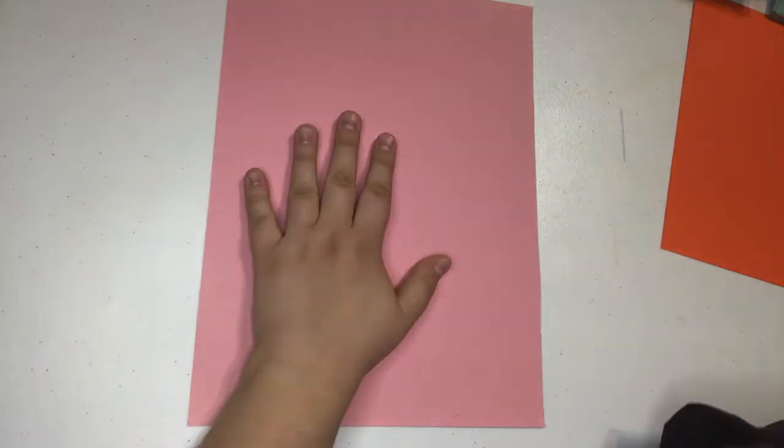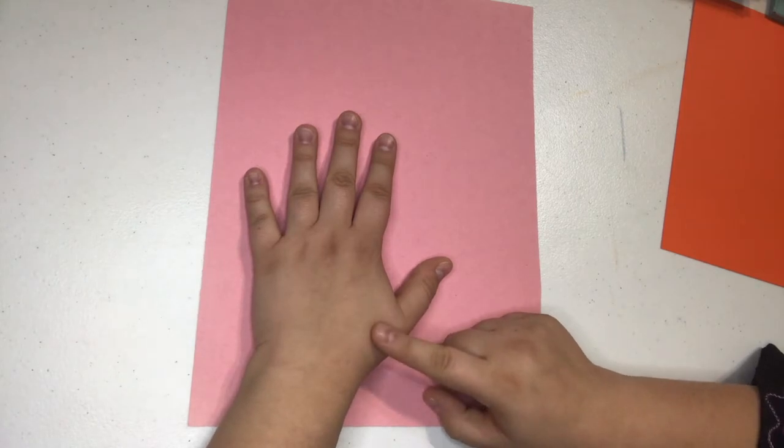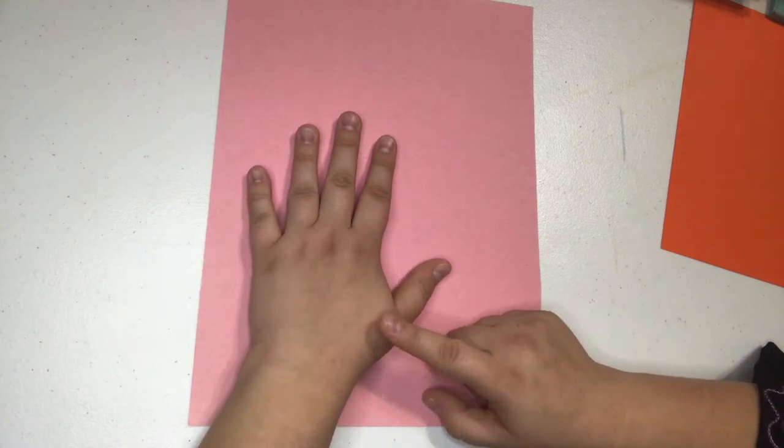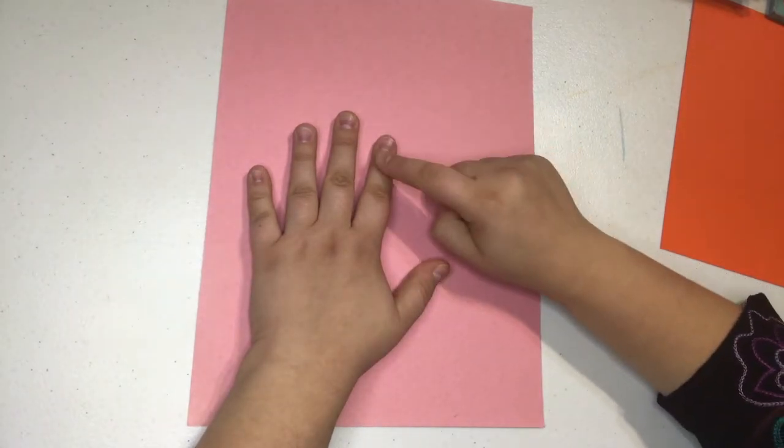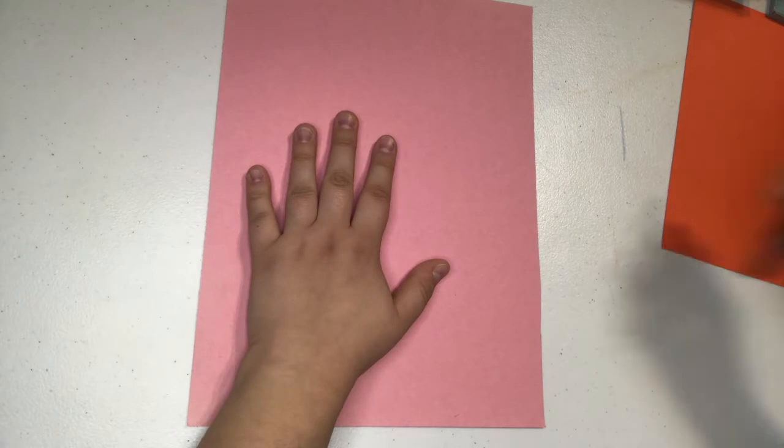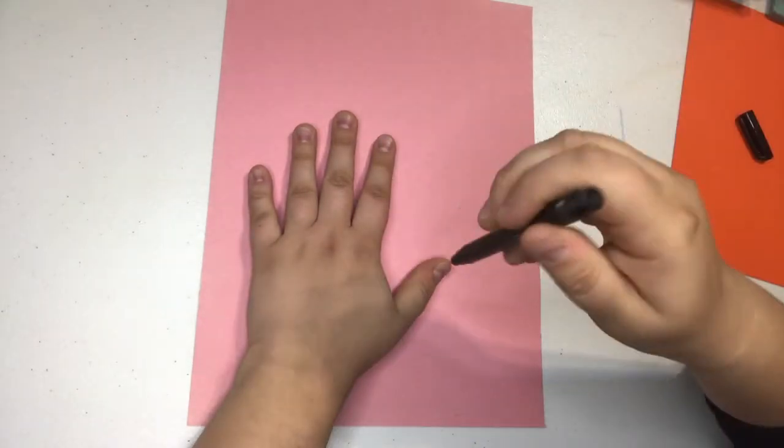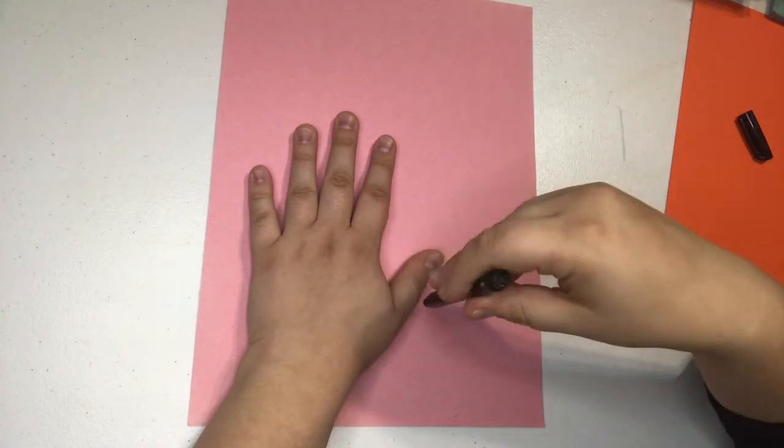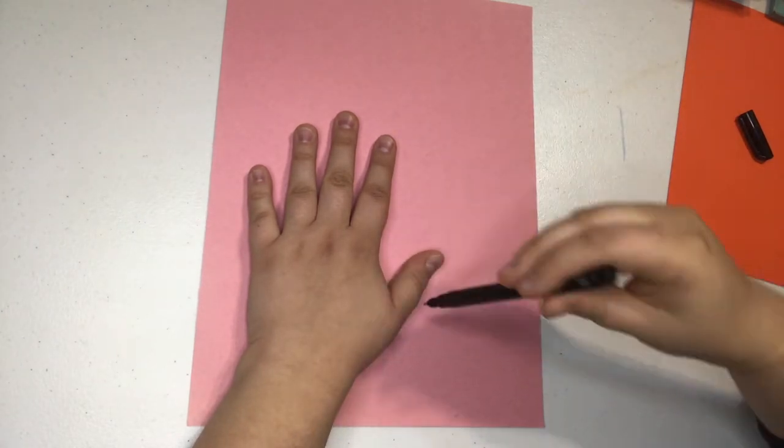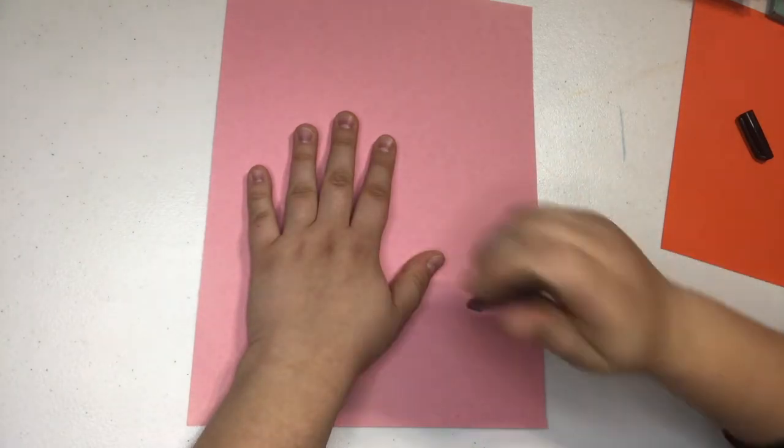When we're tracing our hand on our paper, it's really important to get all of our fingers. But something that I'm going to do to make it easier on myself when it's time to weave is I am going to extend my fingers a little bit longer than they actually are in real life. When you trace your hand, it's really important to make sure that your pencil or whatever you're tracing with is up and down.